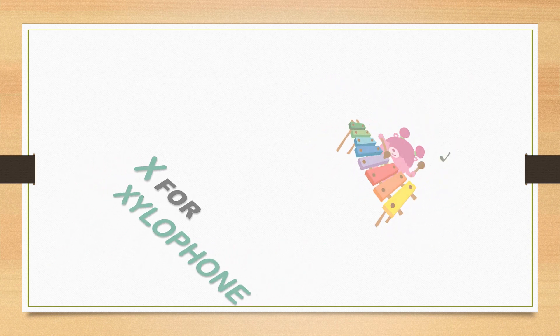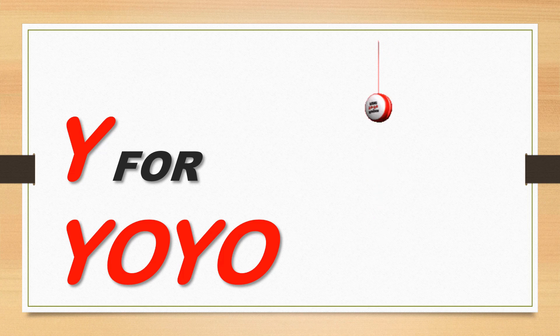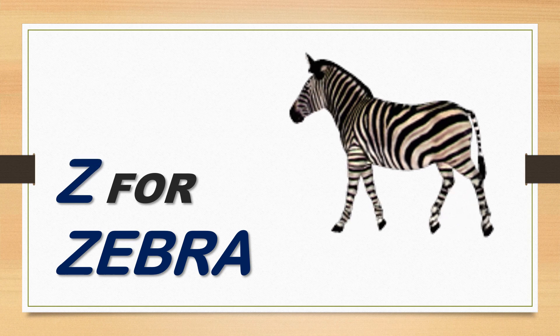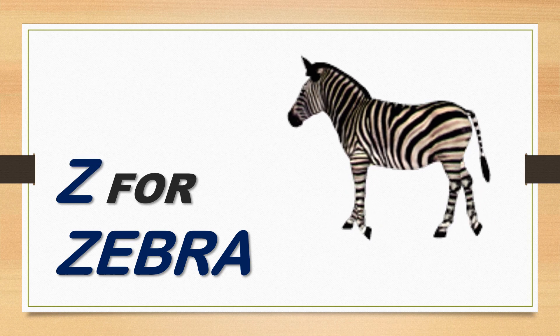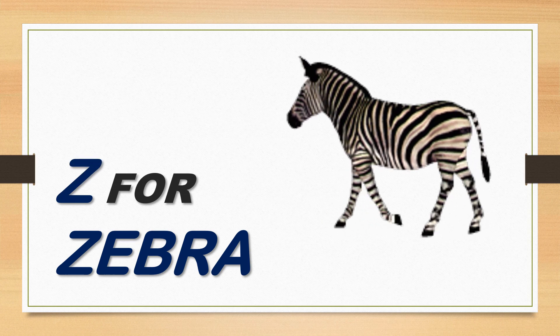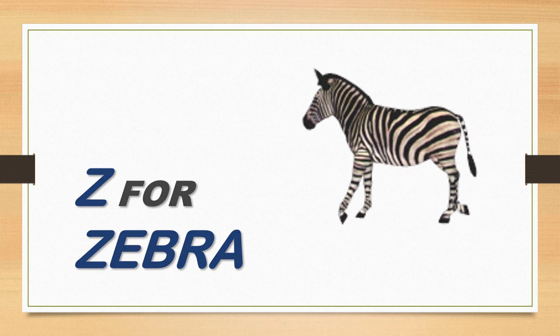X, xylophone. Y is for yo-yo. Y, yo-yo. Y, yo-yo. Y, yo-yo. Z is for zebra. Z, zebra. Z, zebra. Z, zebra.